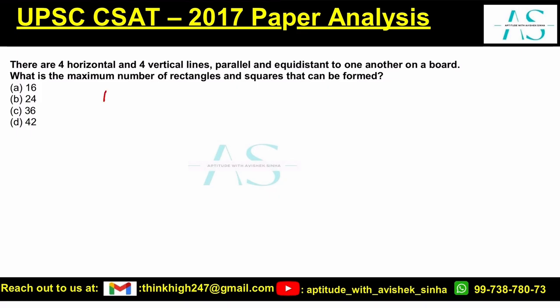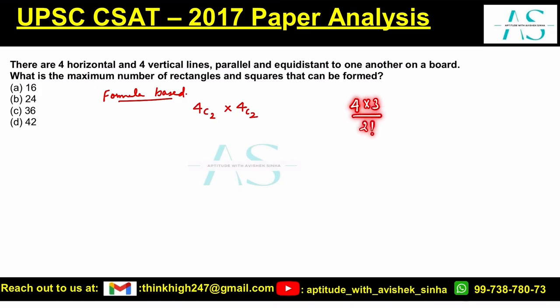This is a straight-up formula-based question from the topic permutations and combinations. It is a figure-based formula. We use the formula of 4C2 into 4C2. For 4C2, I write 4 into 3, then divided by 2 factorial. 2 factorial is 1 into 2.